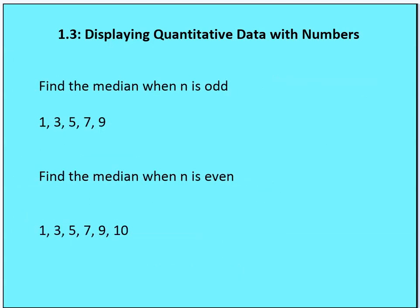Let's take an example — you're going to work along with me, then I'll give you a classwork problem. Find the median when n is odd and the median when n is even. Please pause the video and find these two values. The median value when n is odd is five — it's the third out of five, the center value. These numbers are in order numerically from lowest to highest. For the even case, I have six observations, so I take the two center values — five and seven — add those together: 12 divided by two equals six. So six is going to be the median for the second data set.